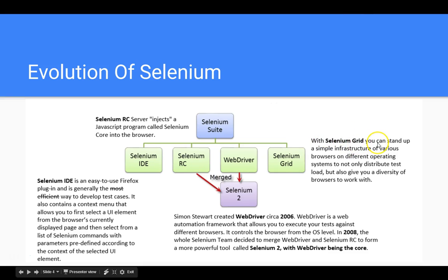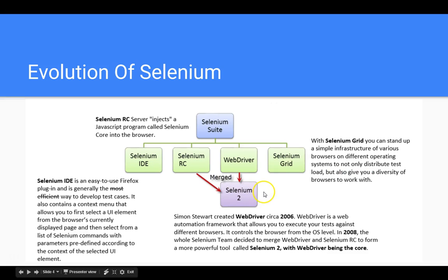Then came Selenium Grid. With Selenium Grid, you can set up a simple infrastructure of various browsers on different OS to not only distribute the test load but also give you diversity of browsers to work with. In short, let's suppose we have five machines: one machine you make as a hub — the hub is nothing but a controller. If you want to run a thousand test cases, you divide them into four parts of 250 each, and from the hub you run those 250 scripts on different machines called nodes. So there is one hub and four nodes, and instead of running all thousand test cases on a single machine, they are divided and run in parallel across different machines.